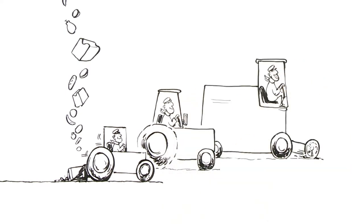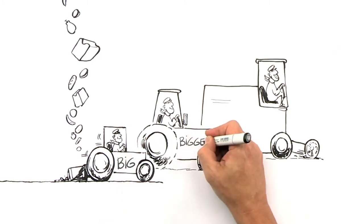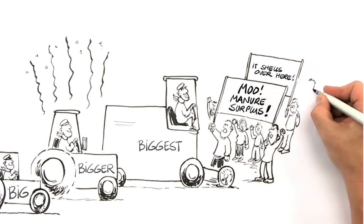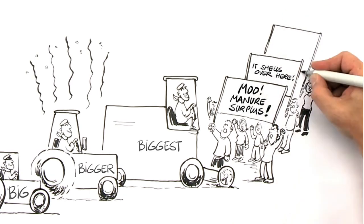The only survival strategy for farmers was to grow big, bigger, biggest. But this growth met with social resistance. Resistance against manure supplies, stench and epidemic outbreaks such as swine fever and Q fever.